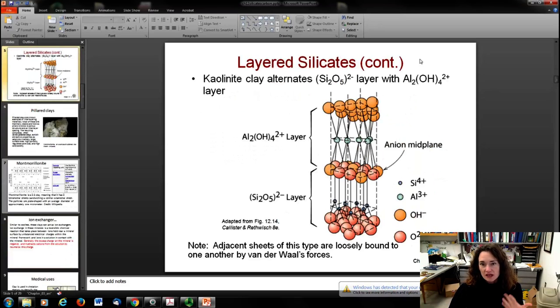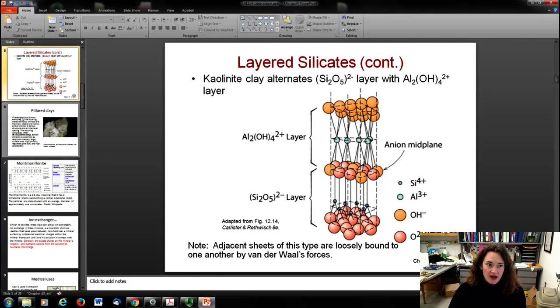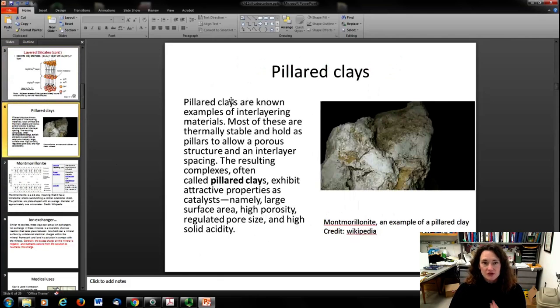Here's an example of a layered silicate: kaolinite clay, which is a layer with another layer containing a lot of aluminum. Adjacent sheets are loosely bound to one another by van der Waals forces. These layered or pillared clays have many applications. Pillared clays are examples of interlayer materials. They're thermally stable, very porous, which makes them attractive because they have good properties as catalysts due to their porosity, large surface area to volume ratio, and high solid acidity.